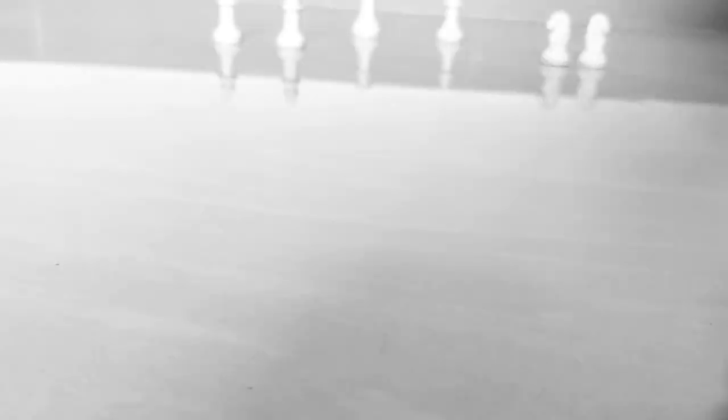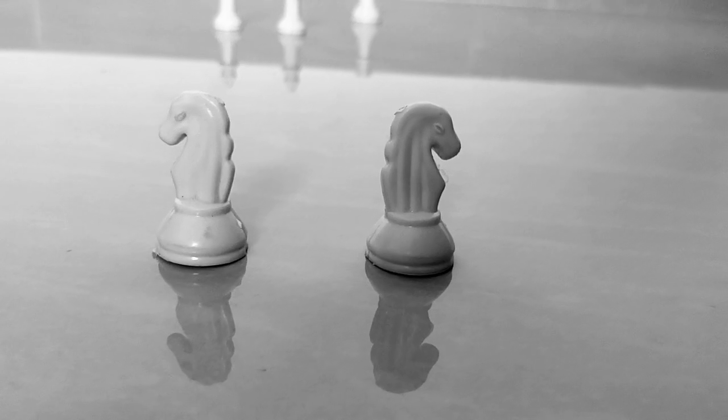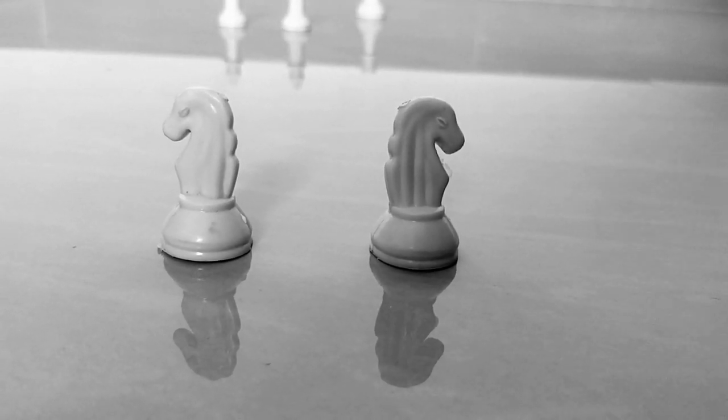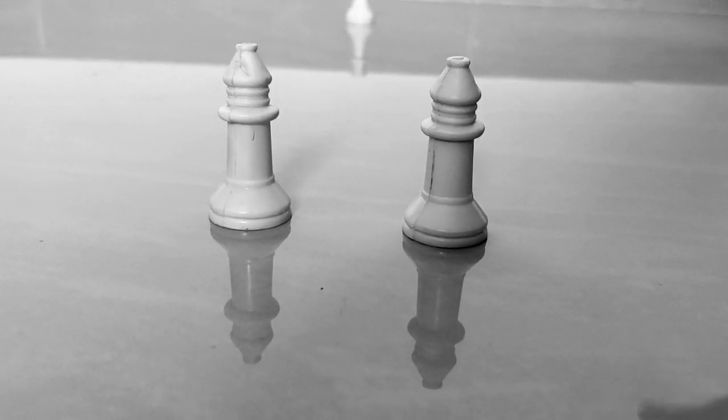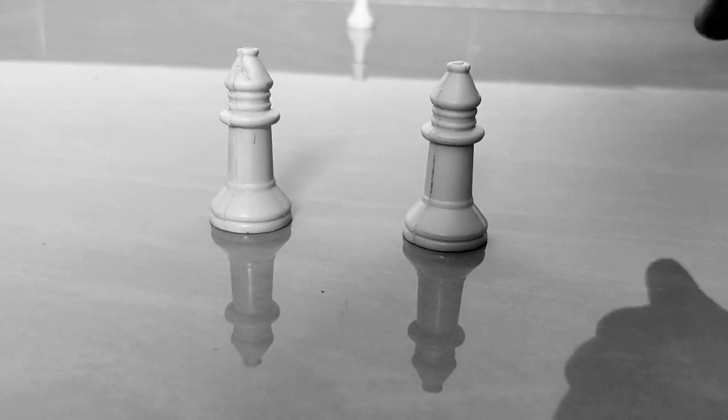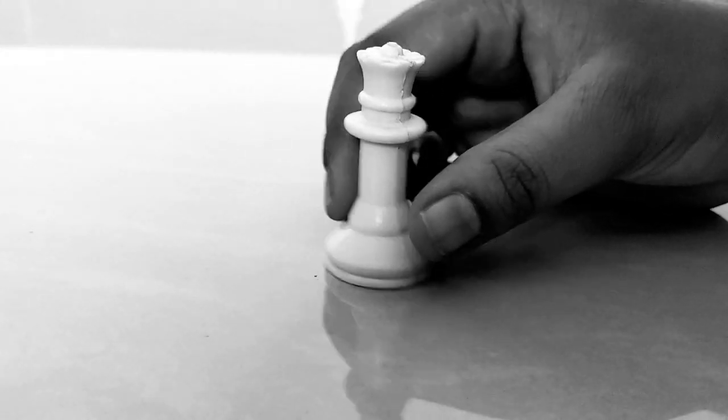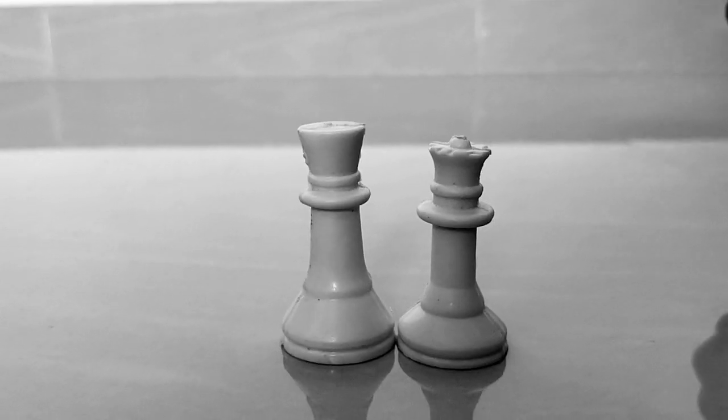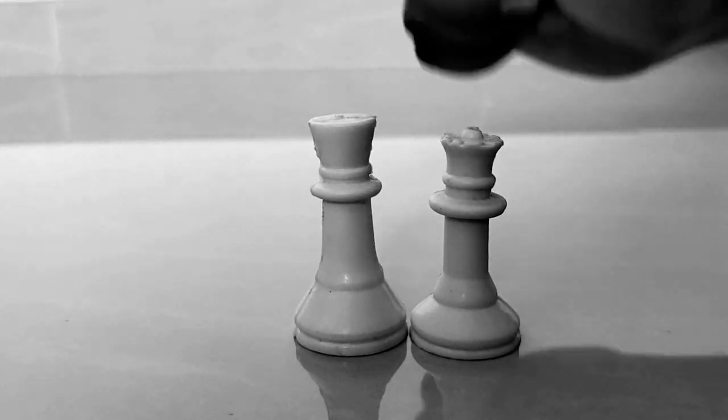This is the rook, this is the knight. Next to the rook is the knight, then the bishop. This is the king.